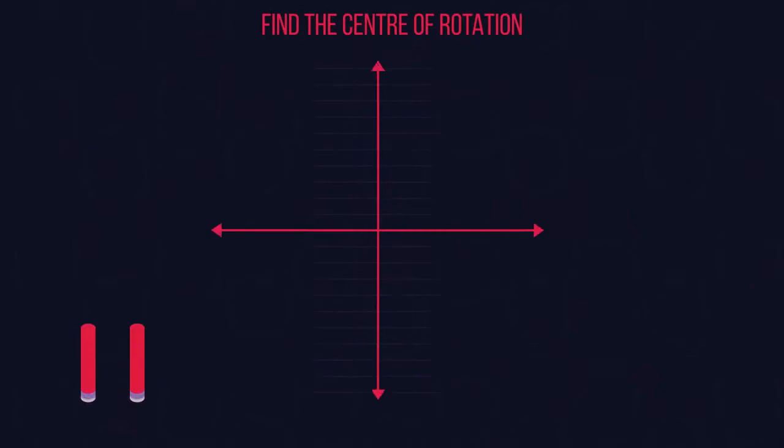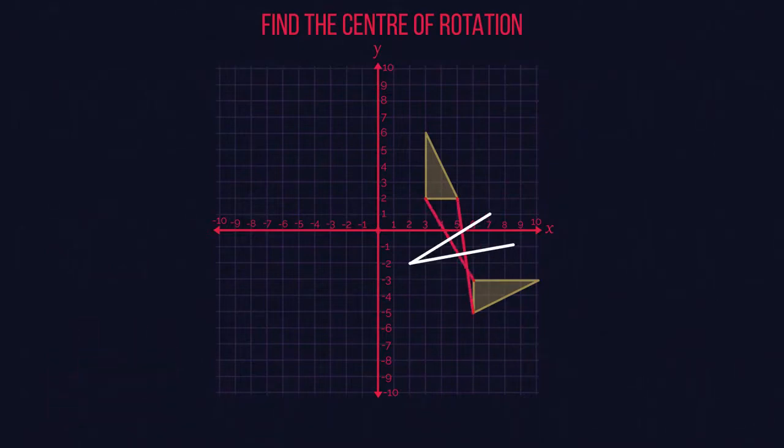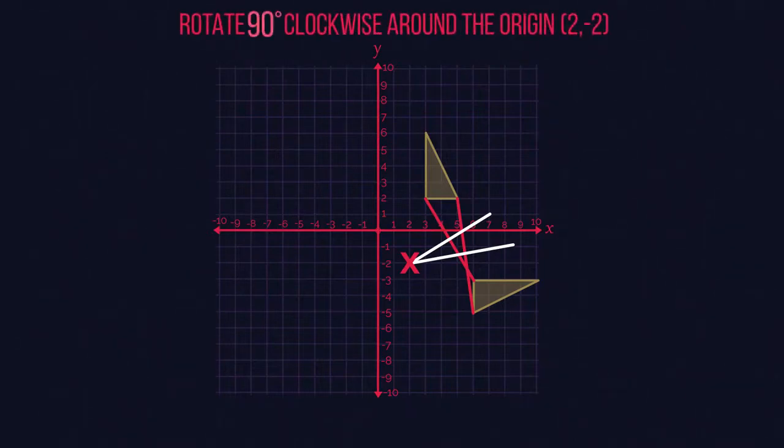Now try one for yourself. Pause the video and have a go. Did you get it right? The centre of rotation is at 2, negative 2. So finally, can you remember what three things we always need in a rotation question? Yep, that's right. The angle, direction, and rotation point.